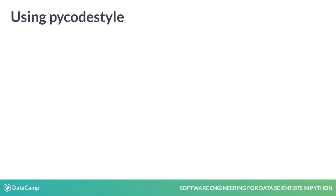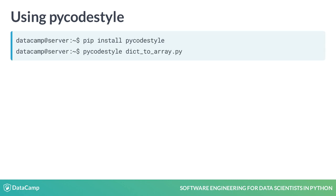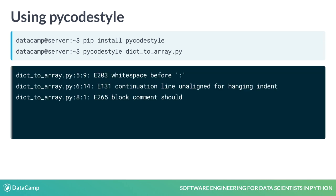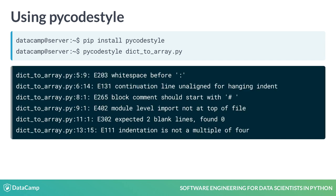Here is some example code on how to install and use PyCodeStyle from the shell. As you'll see in the exercises later, you can also run PyCodeStyle from a Python script. Here we use the command line interface to check the contents of the file DIC2Array.py that contains our poorly formatted code from before.